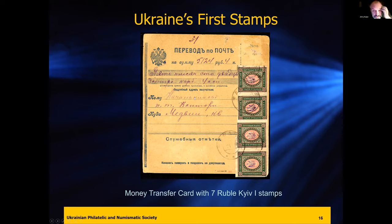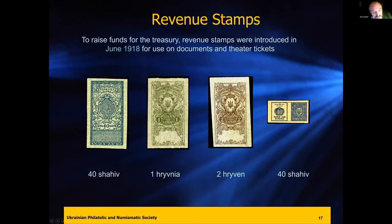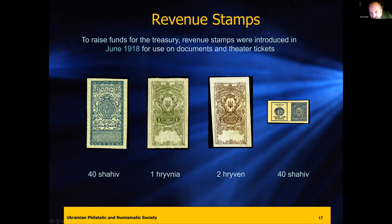Some people collect revenue stamps, which were applied on legal documents. Some are really interesting — Mark Stomakovich has an interesting collection of documents he's exhibited, with a variant of the Podilia overprinted stamps on them. These are all Narbut designs — you can always tell his designs just by looking at the artwork. They also had theater stamps, which some people collect as well.